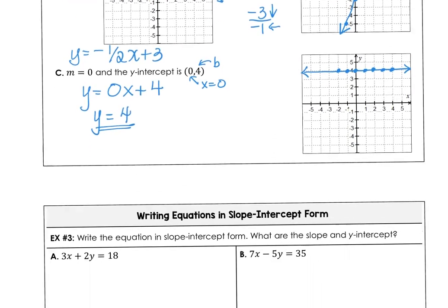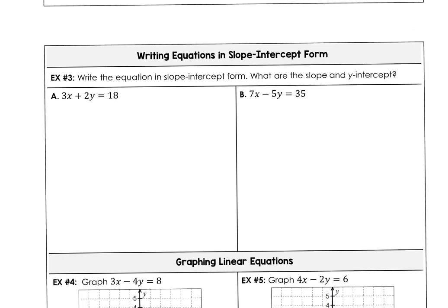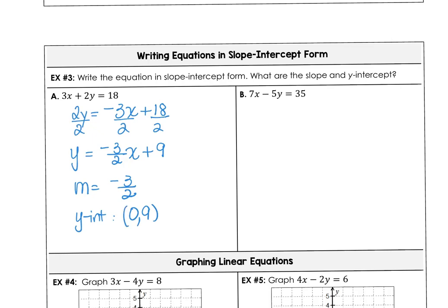Moving on to example 3, we want to write equations in slope-intercept form. So how do you write the equation when you're in standard form? And what are the slope and the y-intercept? So that's the purpose of slope-intercept form. If we isolate the 2y by subtracting 3x from both sides and then divide each term by positive 2, we'll be in slope-intercept form. y equals m times x plus b. So what is our slope? Negative one and a half. And what is our y-intercept? Our y-intercept is the ordered pair 0, 9.